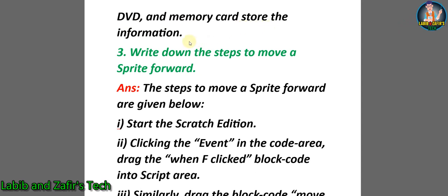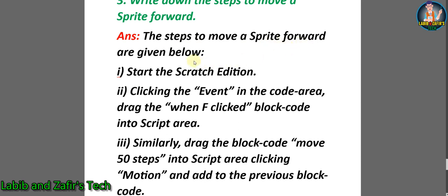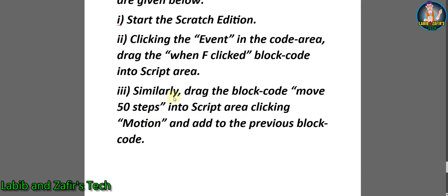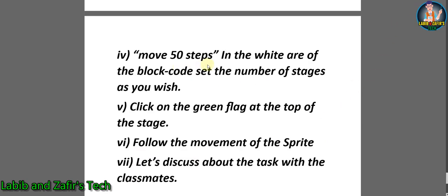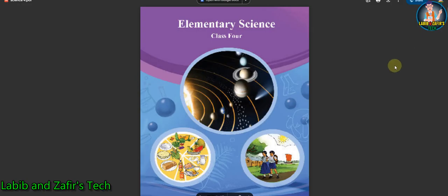Number three: Write down the steps to move a sprite forward. Answer: Step one — start the Scratch editor. Step two — click on Events in the code area and drag the 'when green flag clicked' block code into the script area. Step three — similarly drag the 'move 50 steps' block code into the script area by clicking Motion and add it to the previous block. Step four — in the 'move 50 steps' block code, set the number of steps as you wish. Step five — click on the green flag at the top of the stage. Step six — follow the movement of the sprite. Step seven — discuss the task with classmates.